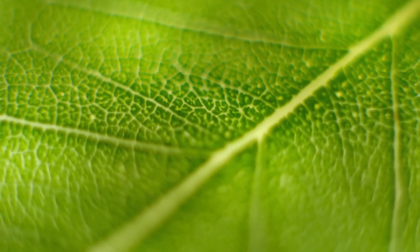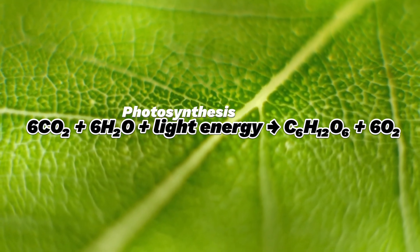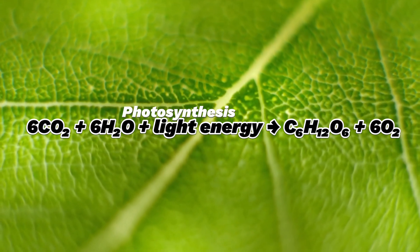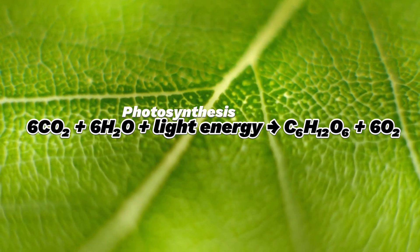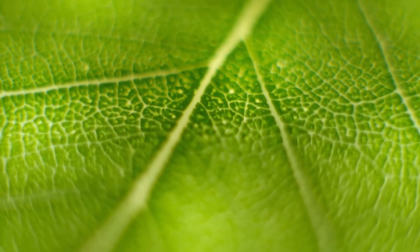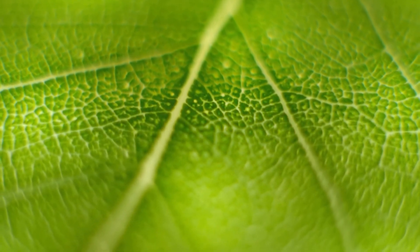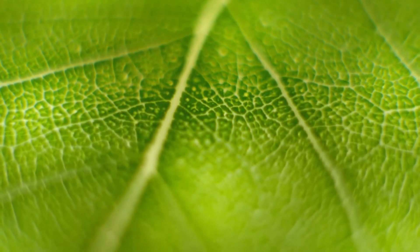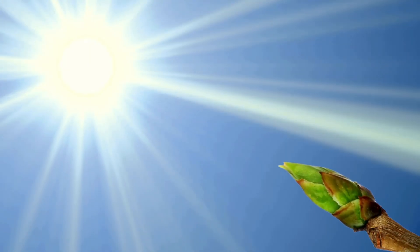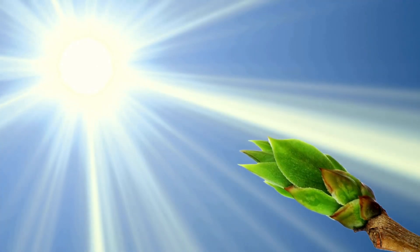The overall chemical equation for photosynthesis is: 6CO2 + 6H2O + light energy → C6H12O6 + 6O2. This means that carbon dioxide and water, using light energy, are transformed into glucose and oxygen. Glucose serves as the plant's energy source, while oxygen is released into the atmosphere.